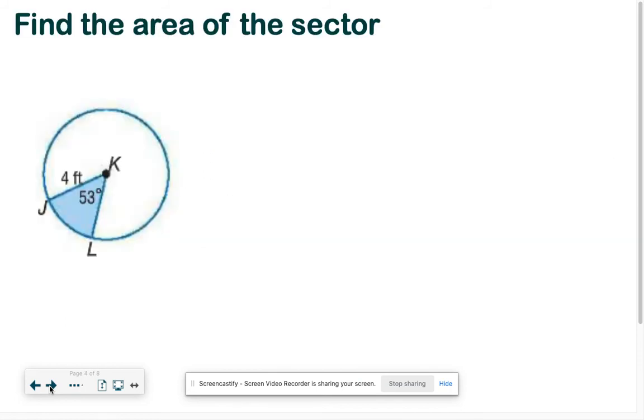So to find the area of the sector, we're just plugging right into that formula. I'll write it out this first time so you can see it. Our angle is 53 over 360.